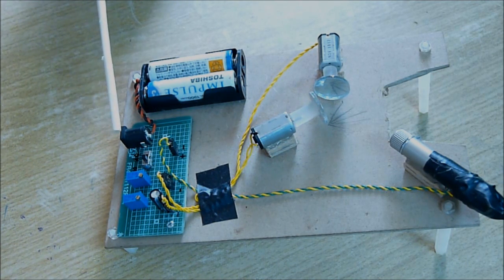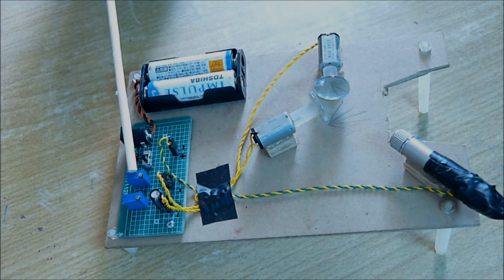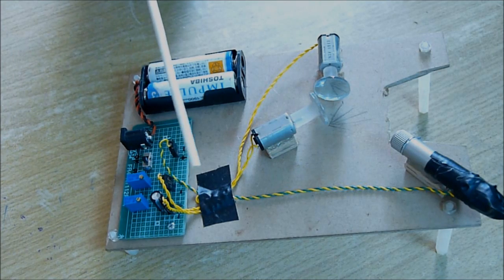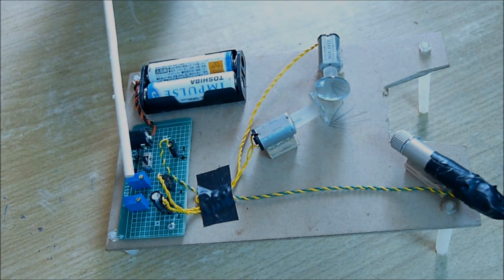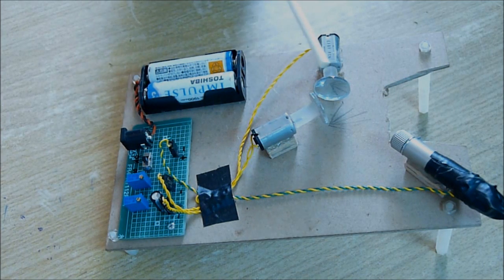The current will flow from here via this resistance to the motor. By varying the resistance you can vary the speed of the motor.